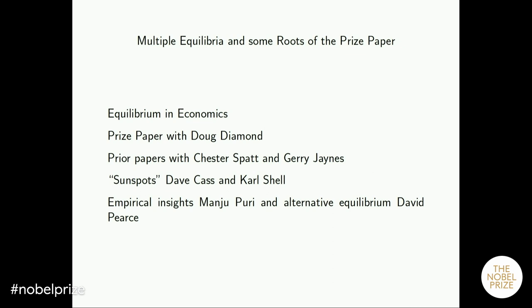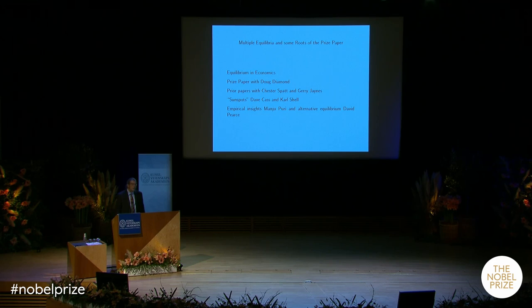Here's a brief outline of what I'm going to talk about: what is equilibrium, the prize paper with Doug, prior papers with Chester Spatt and Jerry Janes, the sunspot model of Dave Cass and Karl Shell — sunspots being an exogenous shock observable by everybody but not economically relevant, used to coordinate on equilibria — and then a couple of ideas for where we could go next in the research.